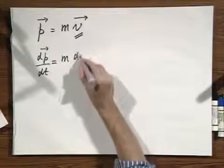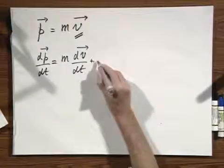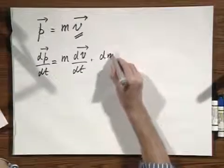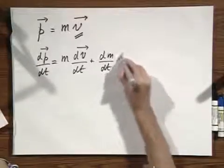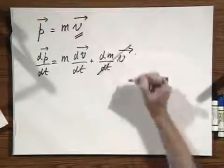equals m times dv dt plus dm dt times v. And if the mass of the object is not changing, then the dm dt is zero.